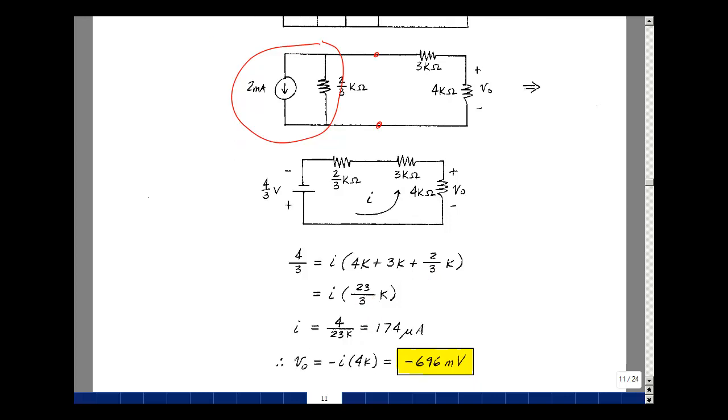And now I can solve for i. The 3s cancel. I'll be taking 4 and dividing it by 23k. And that's 174 microamps.